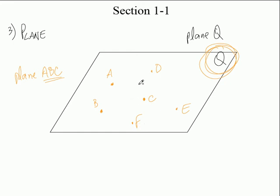The points have to be non-collinear. What if I had a point right here on the same line as others — let's call it G? Could I call this plane BAG? No. Why not? Because it's collinear. I can only pick non-collinear points to name the plane. Let me do a little demonstration — you won't be able to see this on YouTube, but watch.